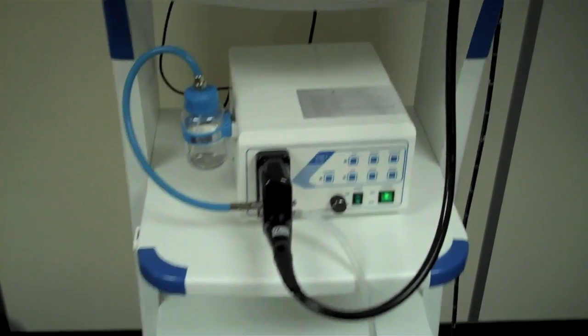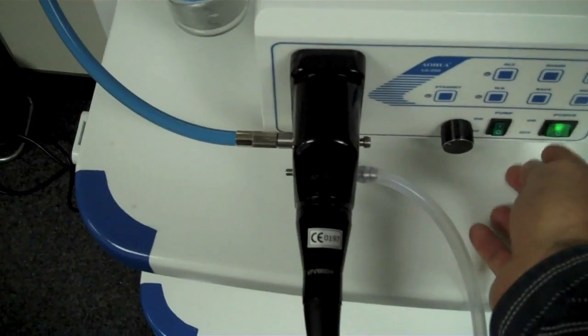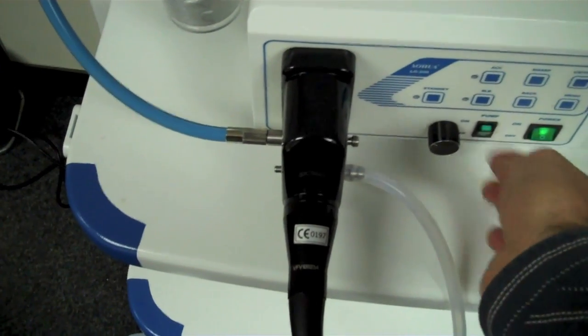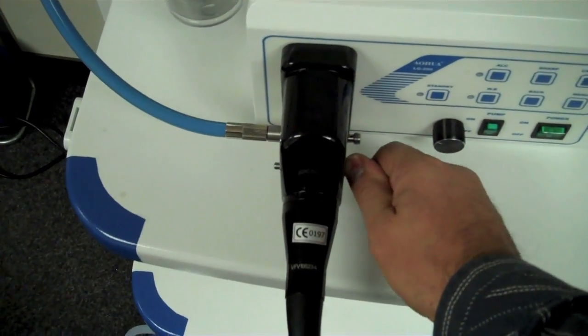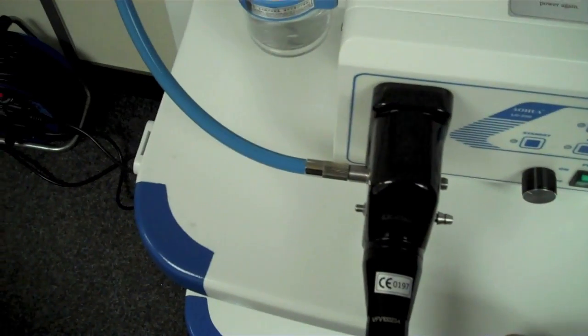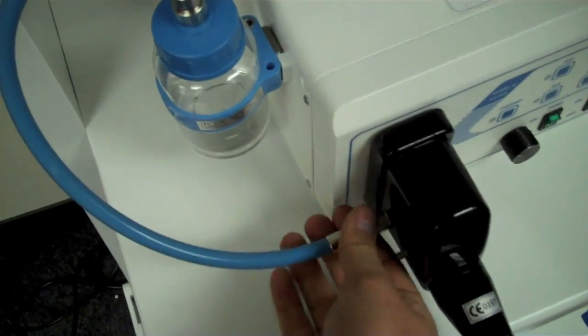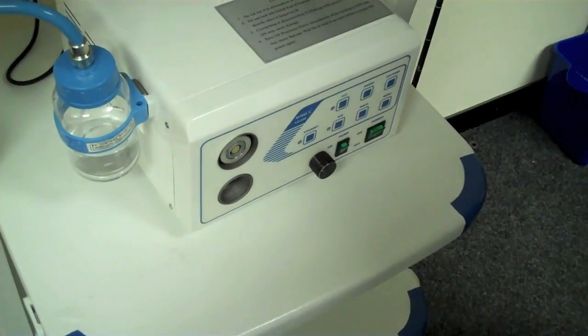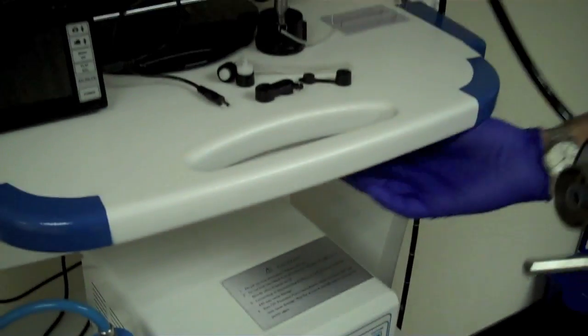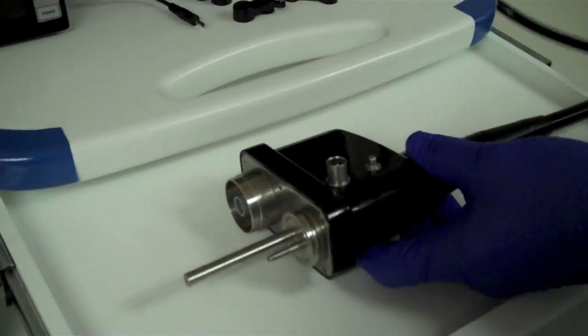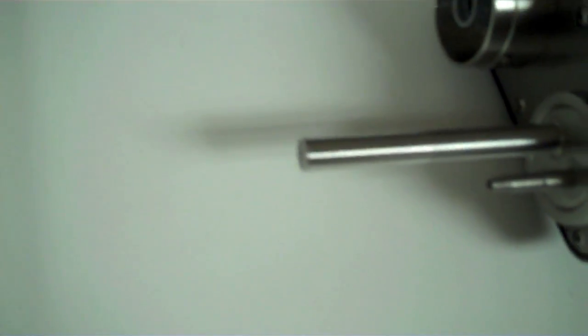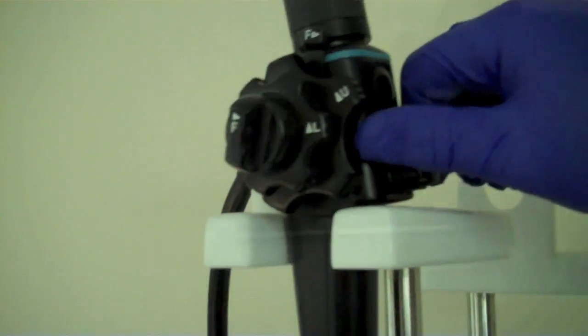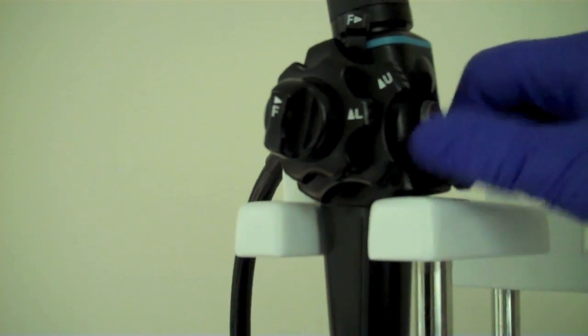Now we just need to disconnect the scope from the pump, the power, take out the suction from the barb and take out the air water supply. Remove the umbilical and place it on the drawer. Do be careful with the light guide because this can be quite hot when it comes out of the light. Now I'm going to remove the suction button and the air water button.